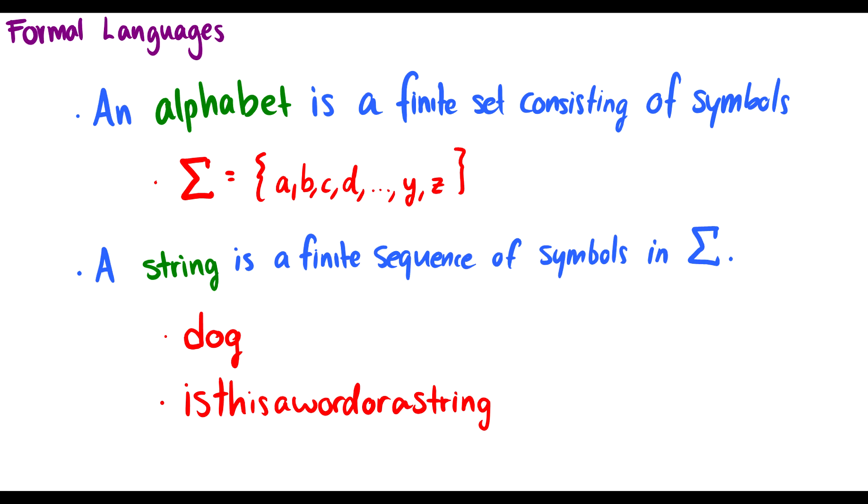We can also have an alphabet, say a binary alphabet, sigma bin, which is just equal to the set containing the symbols 0 and 1. Normally when I pick an alphabet, for example, I'm either going to use all of the letters or binary strings.